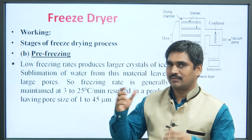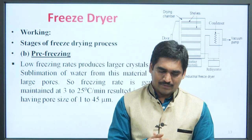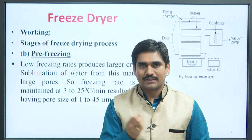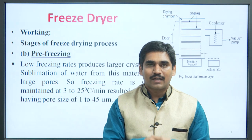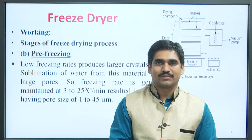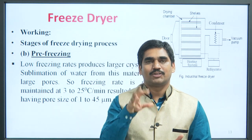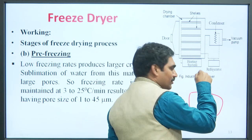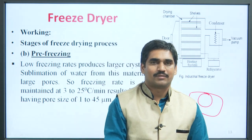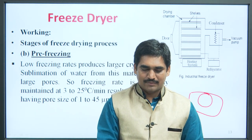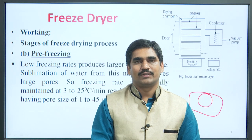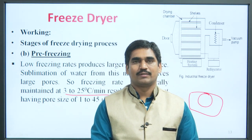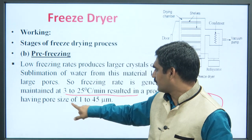After solidification of materials, low freezing rate produces large crystals of ice. If the freezing rate is low, it produces large crystals of ice, and sublimation of water from this material leaves large pores — holes are formed after drying due to the sublimation process. Freezing rate is generally maintained at 3 to 25 degree Celsius per minute, which results in a product having a pore size of 1 to 45 micrometers.